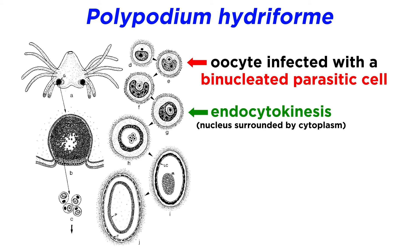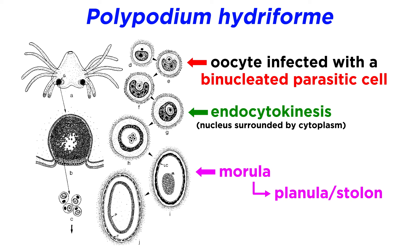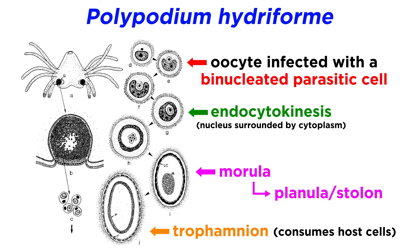This process of endocytokinesis happens when the small nucleus inside the binucleate cell becomes surrounded with a tiny portion of cytoplasm. The smaller internal cell divides, passes a morula stage, and then becomes an inverted planula and stolon with tentacles on the inside. The external region has the ability to consume the cells of its host and is called a trophamnion. Development of polypodiozoa within the oocytes of its host is strongly correlated with the progress of oogenesis in the host fish, and is triggered by it, meaning the development of the parasite depends on the sexual development of its host.